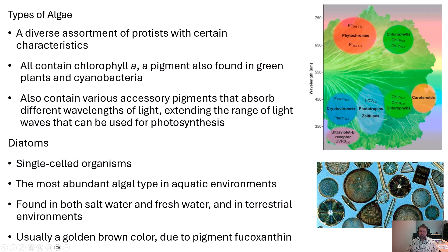Diatoms don't all have to be golden-brown — some are greenish, which suggests they have more chlorophyll A, or B, or both. They come in all kinds of different shapes and sizes, and they're a very abundant and interesting group in aquatic environments.